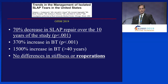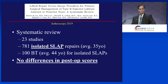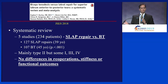But when they looked at the data, they found no differences in stiffness or reoperations whether you had a tenodesis or a SLAP repair. In this systematic review of 23 studies comparing isolated SLAPs versus biceps tenodesis, again no differences in postoperative scores. And yet another systematic review of five studies — SLAP repair versus biceps tenodesis — found no differences in reoperations, stiffness, or functional outcomes.